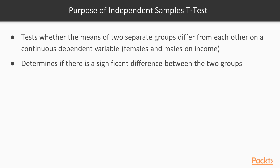The purpose of the independent samples t-test is to test whether the means of two different groups differ significantly from each other. These have to be completely separate groups — it can't be a before-and-after design assessing the same people. You're comparing these groups on some continuous outcome variable. For example, you may be comparing females and males on income. The test determines if there's a difference between these two groups.